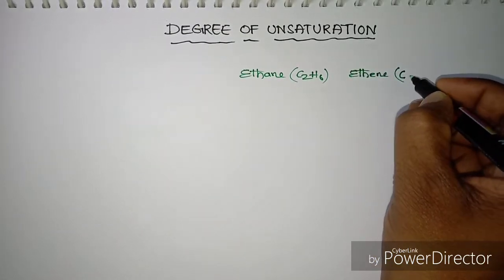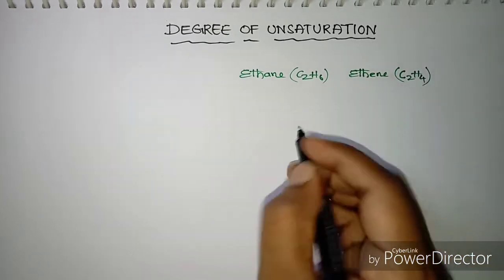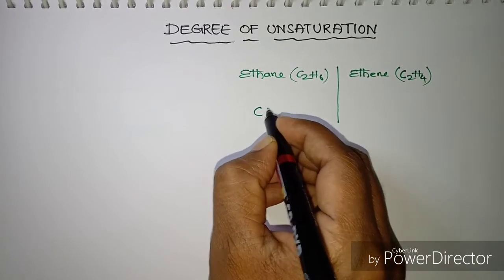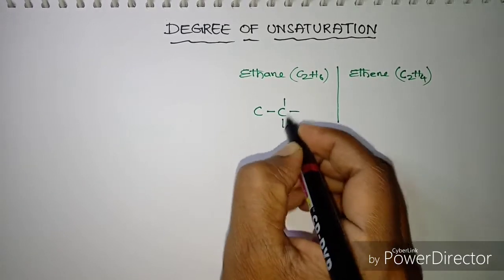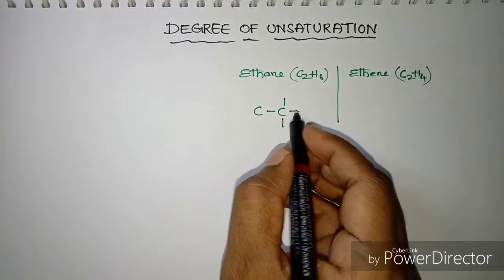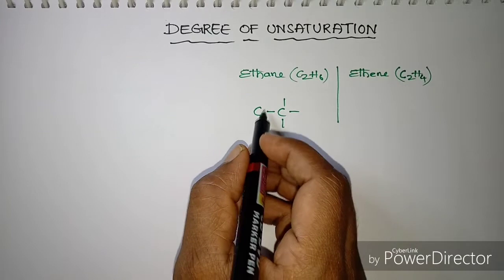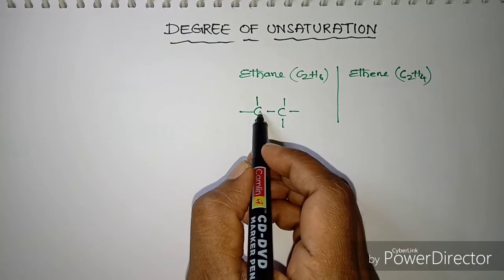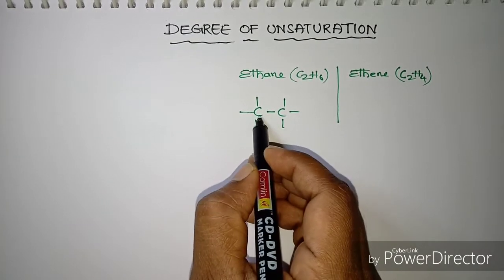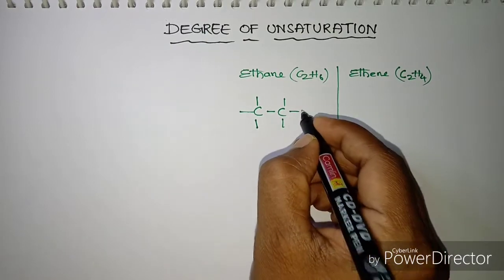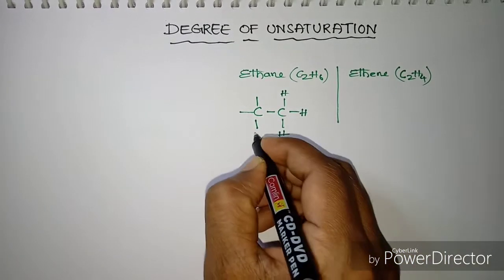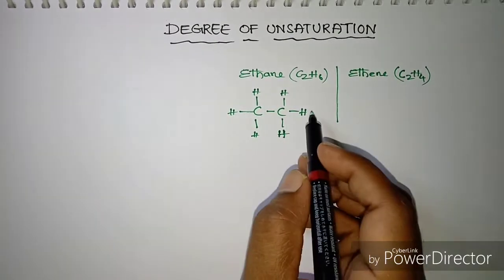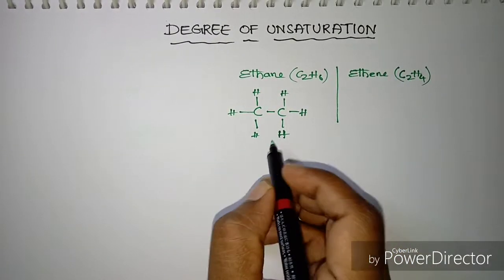Now I'll try to give the structure of these two compounds. For ethane, a carbon atom will have four valences and it tries to always satisfy its four valences. In case of ethane there are two carbons, each carbon will have four valences, and of those four valences one valence of one carbon is satisfied with the other carbon, and the rest of the valences are satisfied with the available six hydrogens. As all the valences are satisfied with the available other atoms, this is a saturated compound.